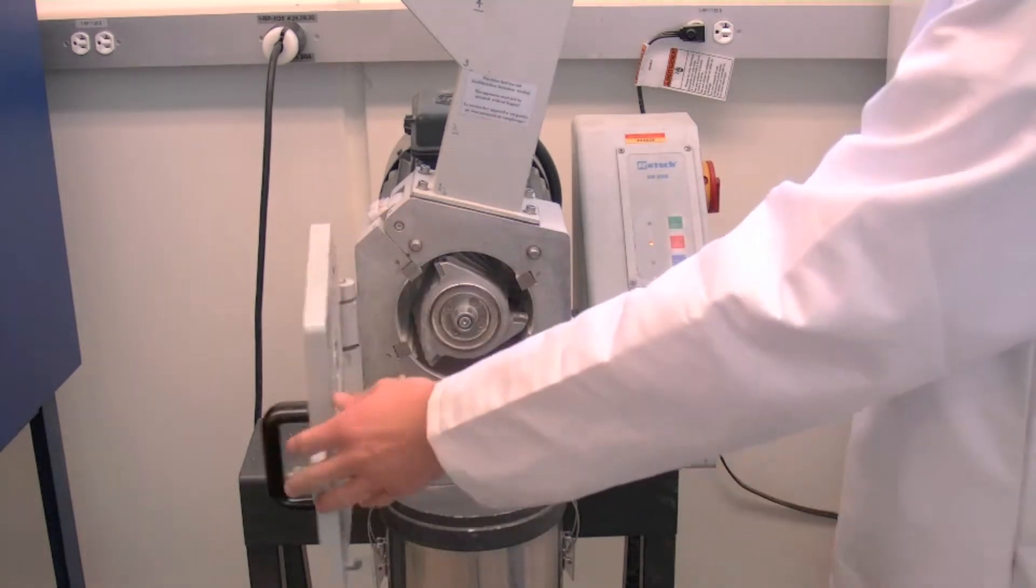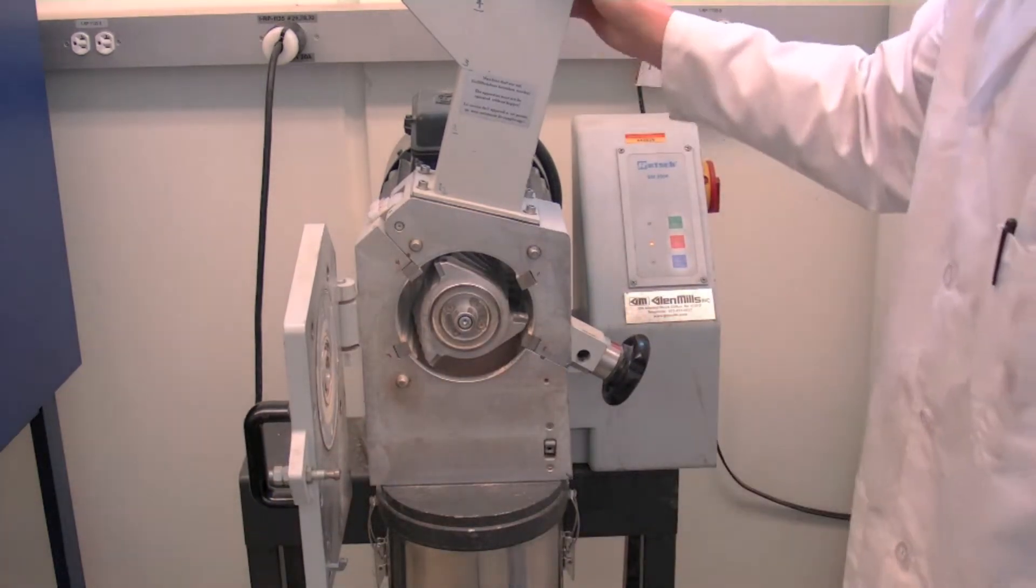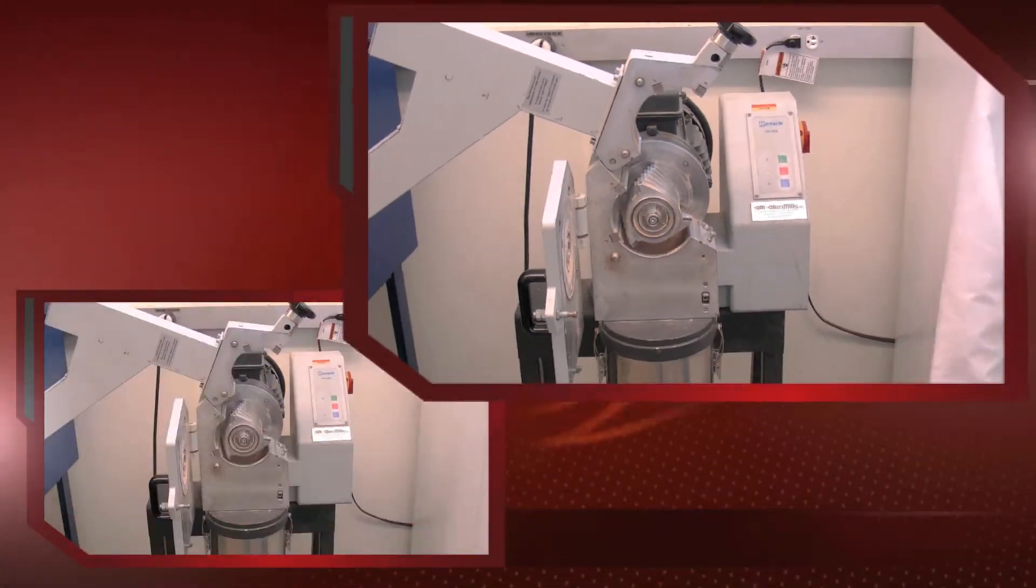Pull the hand wheel out and turn it counterclockwise to open. Now pull the handle. Push the hopper to expose the blades.